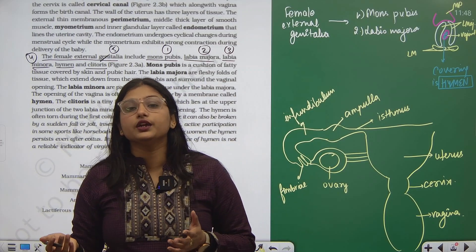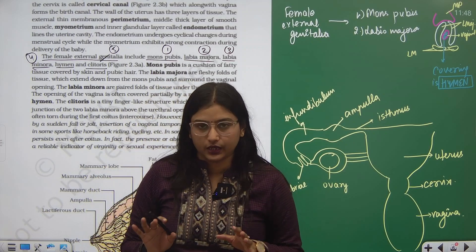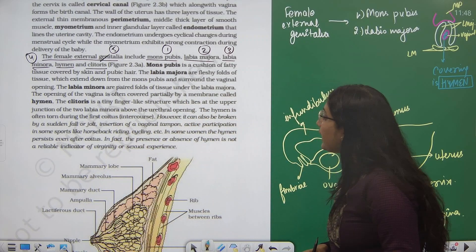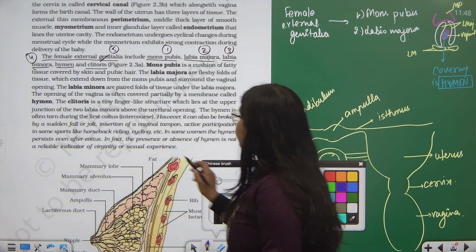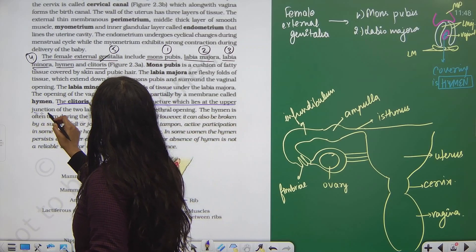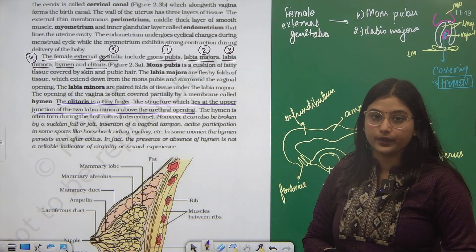Then we have the next part, that is the clitoris. Clitoris is the tiny finger-like structure which lies at the upper junction of the two labia minora above the urethral opening.